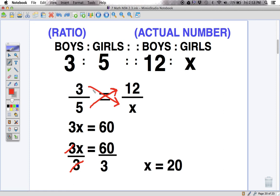Cross multiplication works. We take the numerator of the first fraction and we multiply it by the denominator of the second fraction. 3 times x gives us 3x. We take the denominator of the first fraction and we multiply it by the numerator of the second fraction. 5 times 12 is 60. And so we have an equation. 3x equals 60.